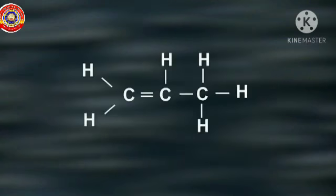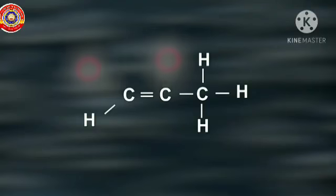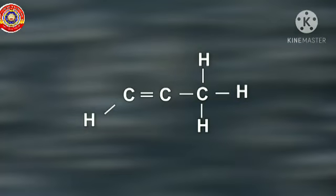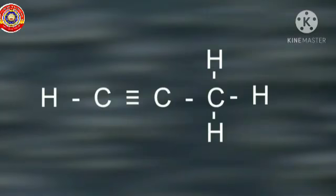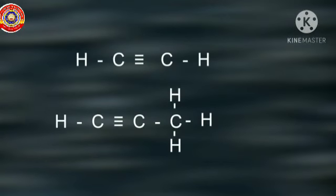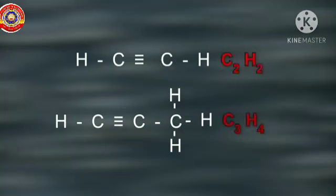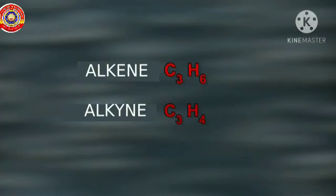Observe the structure of an alkene with three carbon atoms. If we remove one hydrogen each from two carbon atoms, the double bond between those carbon atoms changes to a triple bond. Therefore the molecular formula of this compound will be C3H4.